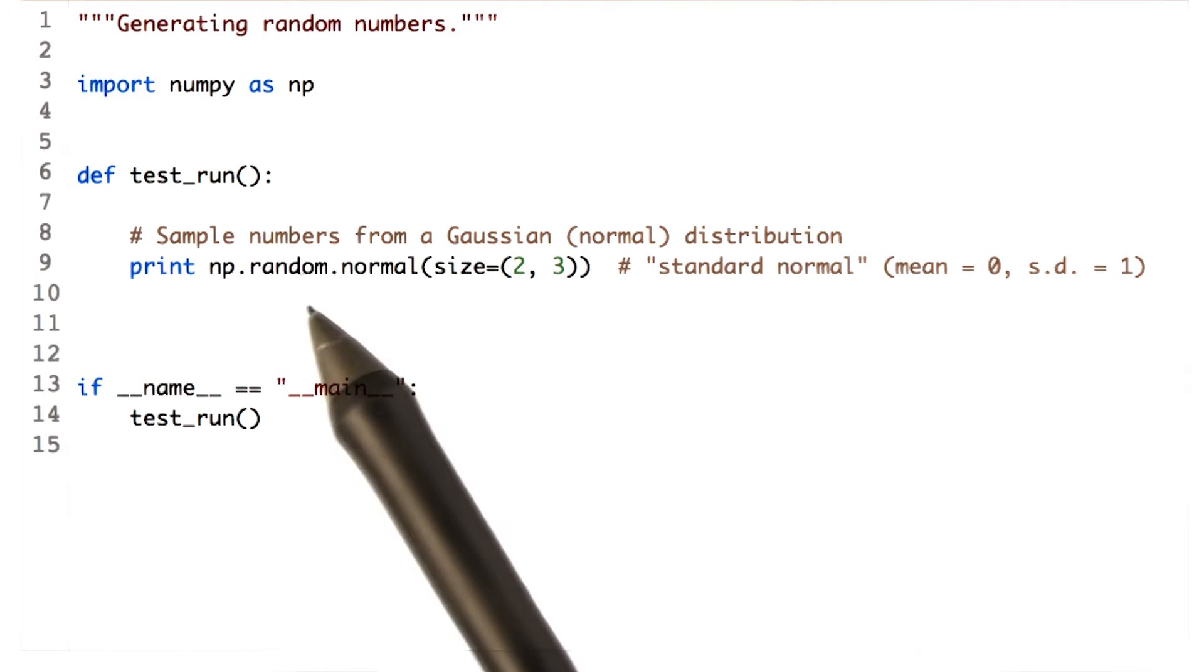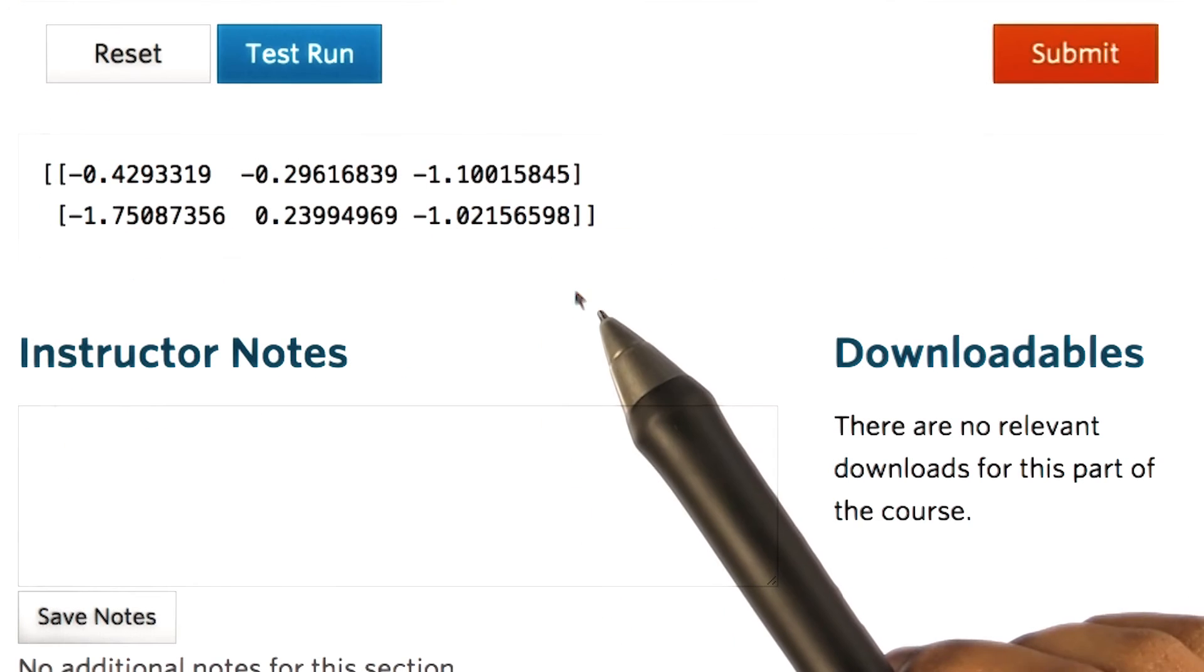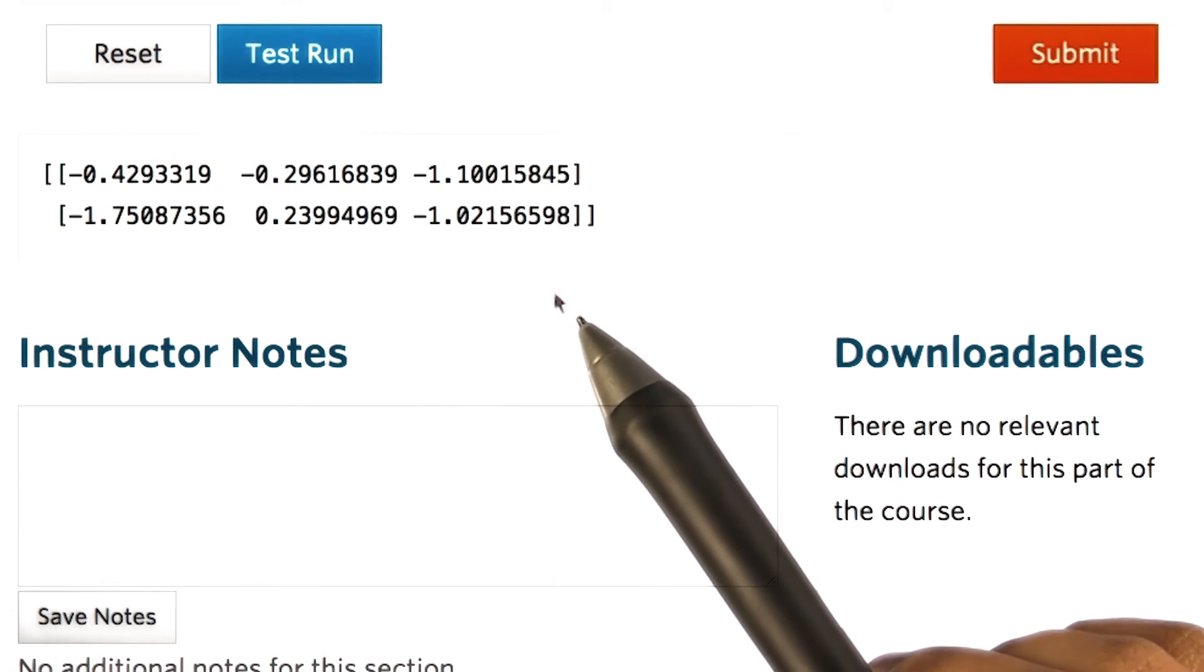We call the normal function from NumPy.random and pass the shape of the array we require. Let's run this. The code produced a 2 by 3 array of random numbers with a standard normal distribution. That is 0 mean and unit standard deviation.